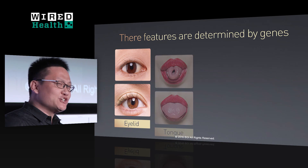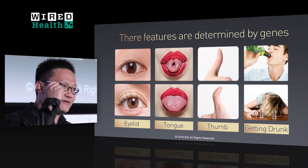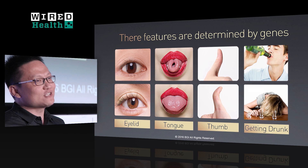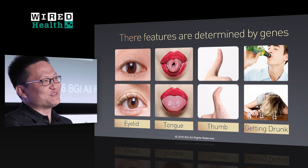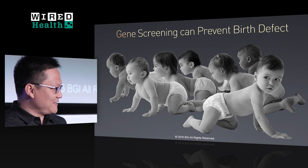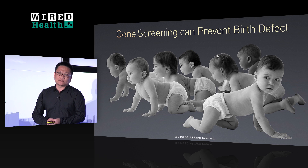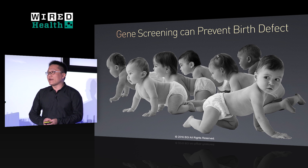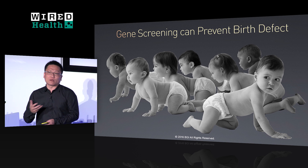Genes determine many very obvious phenotypes. For example, whether you get a single or double eyelid, bending thumb or not, rolling tongue or not, even how much you drink before you get drunk — this is determined by genes. But if mutations occur in certain genes or chromosomes, it may cause birth defects. In China, there are nearly 20 million newborn babies every year, and the birth defect rate reaches 5%. So it's a very serious problem for us.